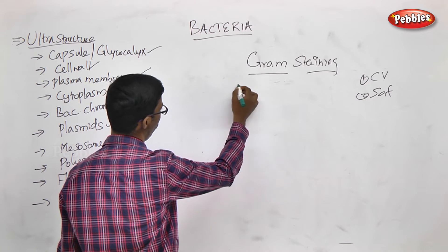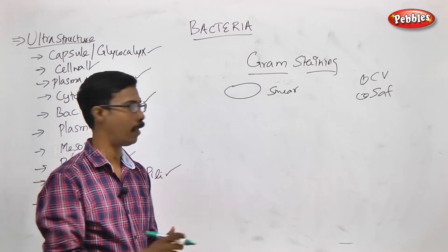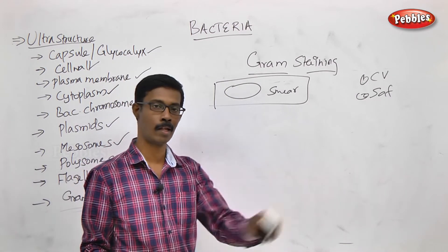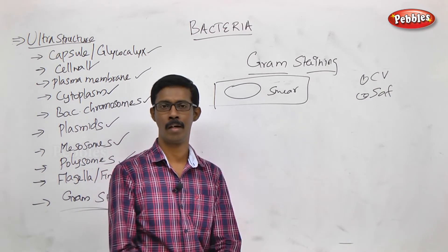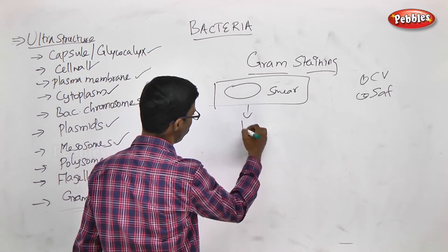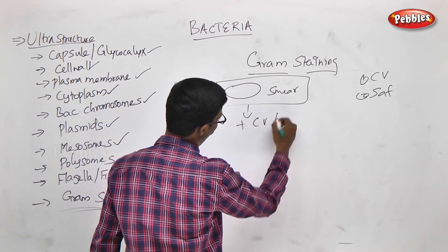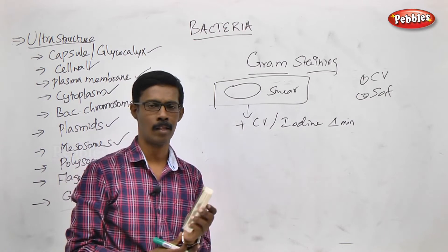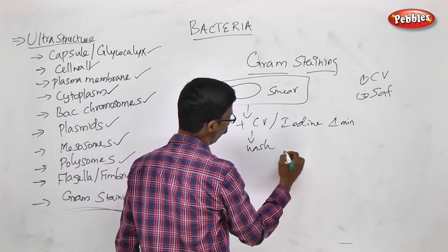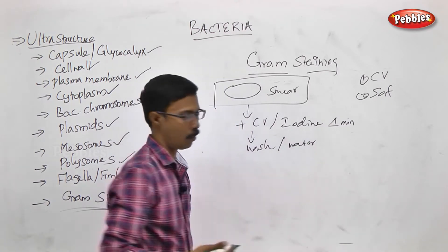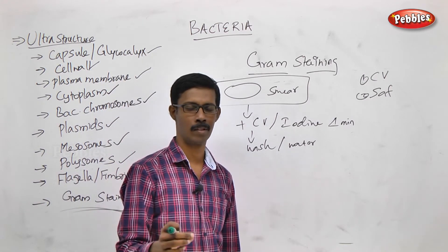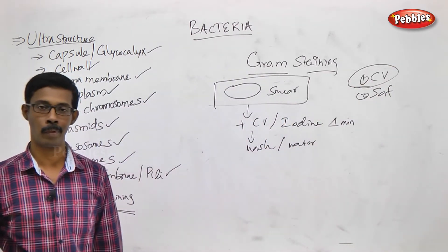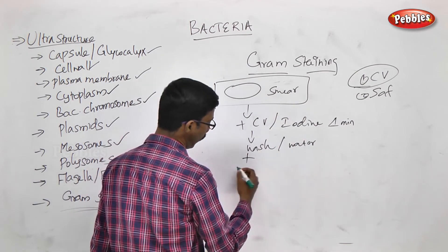Here is the procedure. First, bacteria are smeared on a glass slide — a thin layer of bacteria is made. The smear is heat-fixed to fix the layer to the glass for about 30 seconds to one minute. Then it is washed in water. Then we apply the primary stain, Crystal Violet. After washing, iodine is applied as a mordant.